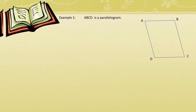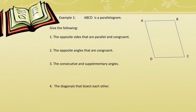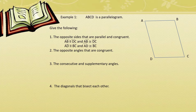Example number one. ABCD is a parallelogram. Give the following. Number one: the opposite sides that are parallel and congruent. We have side AB is parallel to side DC, and side AD is parallel to side BC. At the same time, side AB is congruent to side DC, and side AD is congruent to side BC.